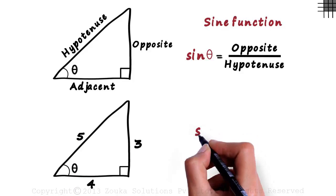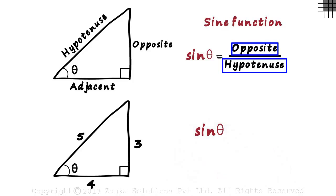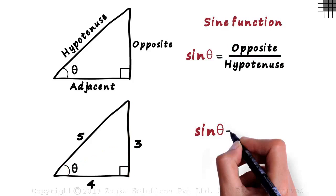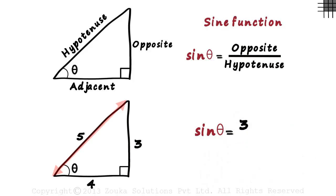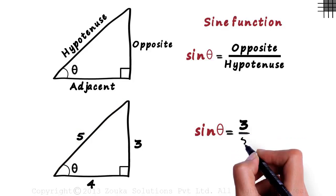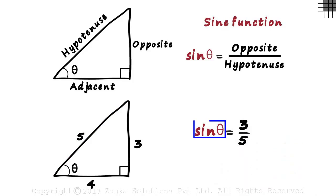The formula for sin θ is opposite by hypotenuse. The length of the side opposite the angle theta is 3 units, so we write a 3 in the numerator. The hypotenuse is 5 units, so we write 5 in the denominator. The sine of theta in this case is equal to 3/5, which equals 0.6.